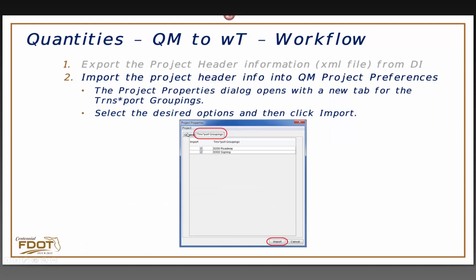Once I select it, it will populate the General tab. There is also a Transport Grouping tab — every category that's already been opened up in Transport will show up here so that you have these options within your database. Click the ones you desire. I recommend going ahead and selecting them all and importing whatever is available. Once I have my options set, I click Import and you're good to go.